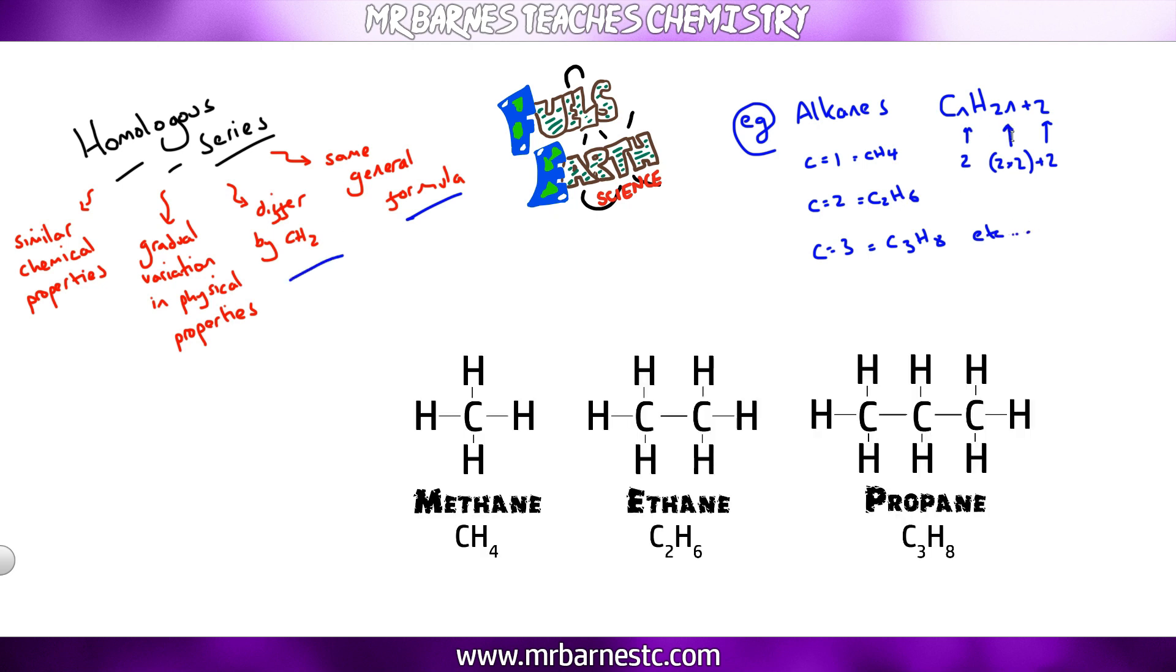Now the second property I talked about, they differ by CH2. So as I go from methane to ethane all I'm doing is adding a CH2 which I've circled here. And the same from ethane to propane. So every time carbon goes up by 1 I get an extra CH2 molecule.